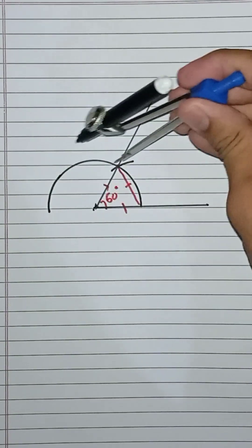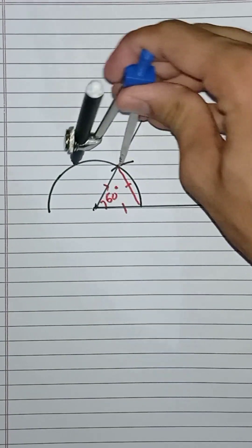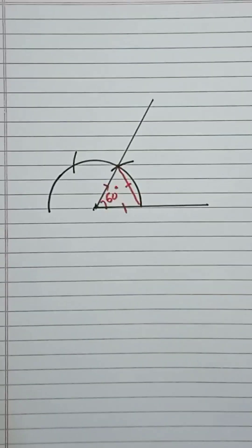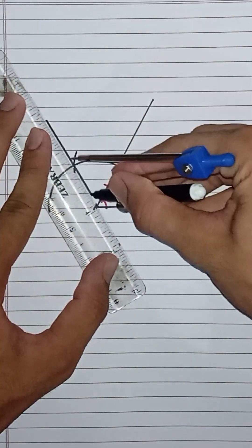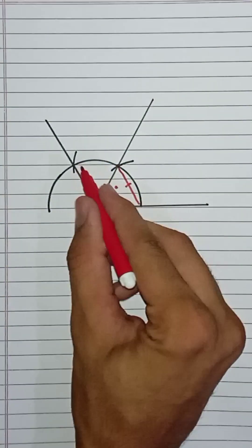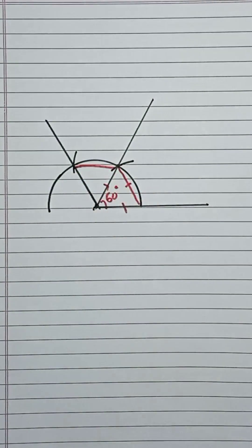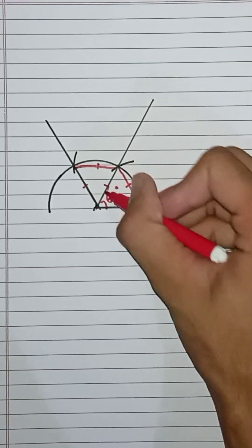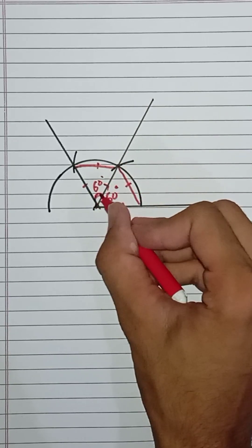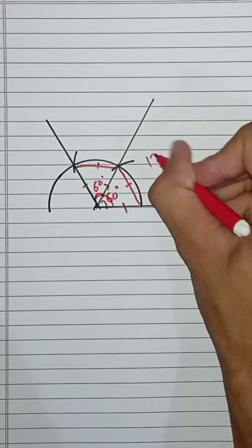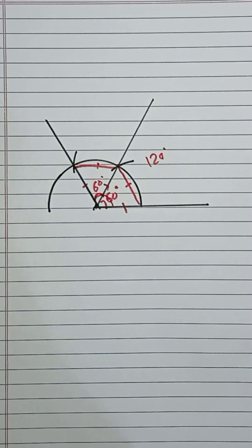As the radius of the semicircle, draw an arc here, then draw a line. Again, this is an equilateral triangle and each interior angle of an equilateral triangle is 60 degrees. Thus, the whole angle here will be 120 degrees. In this way, we can construct a 120 degree angle.